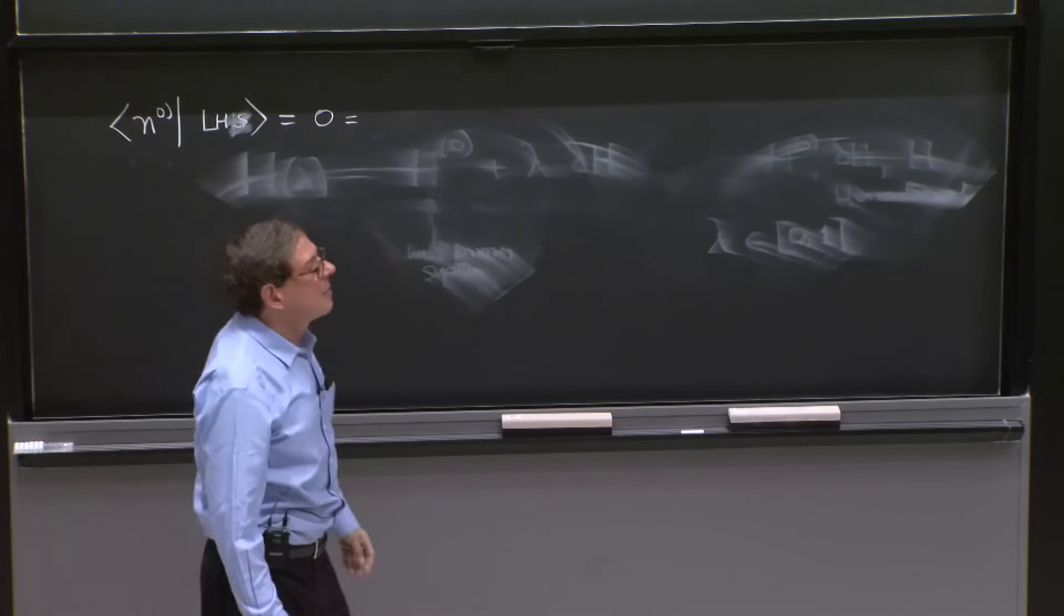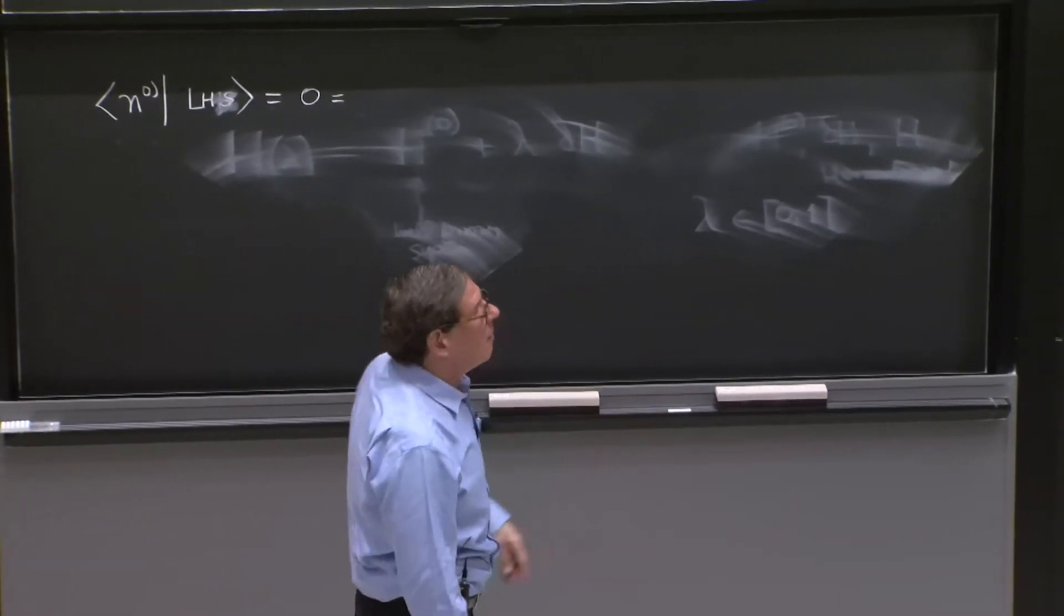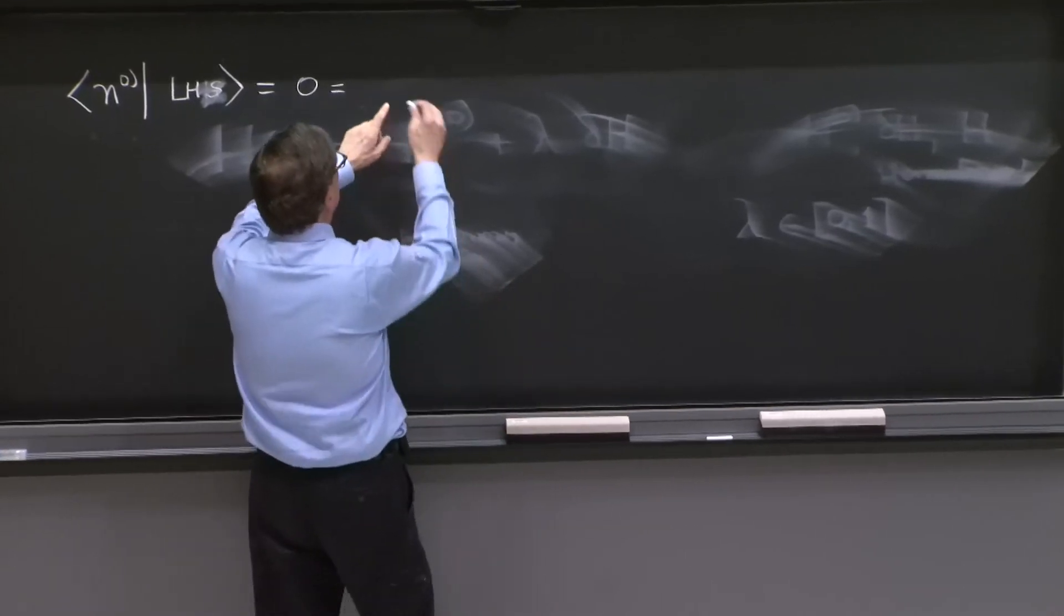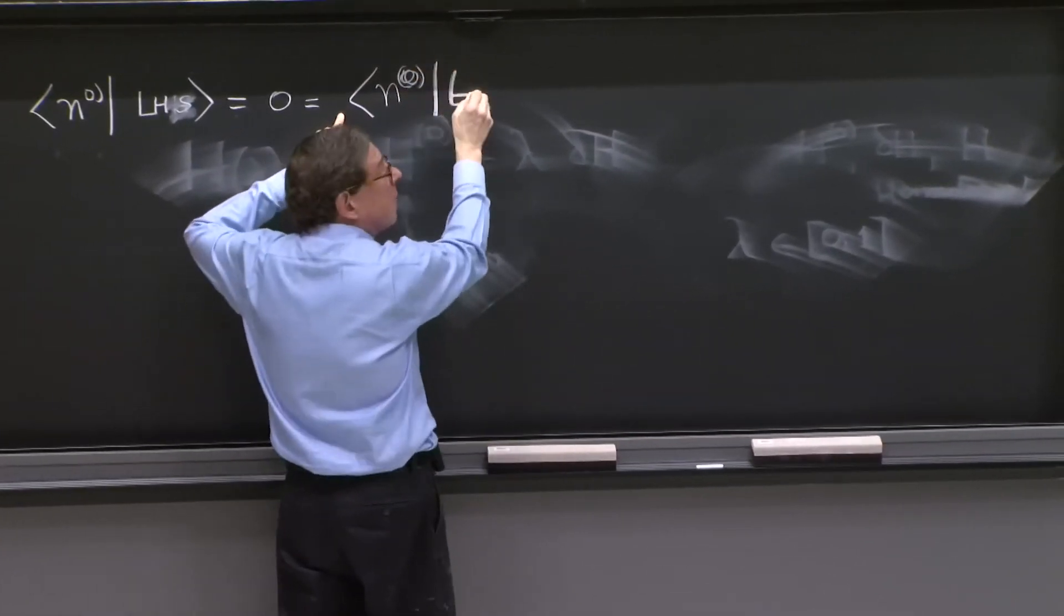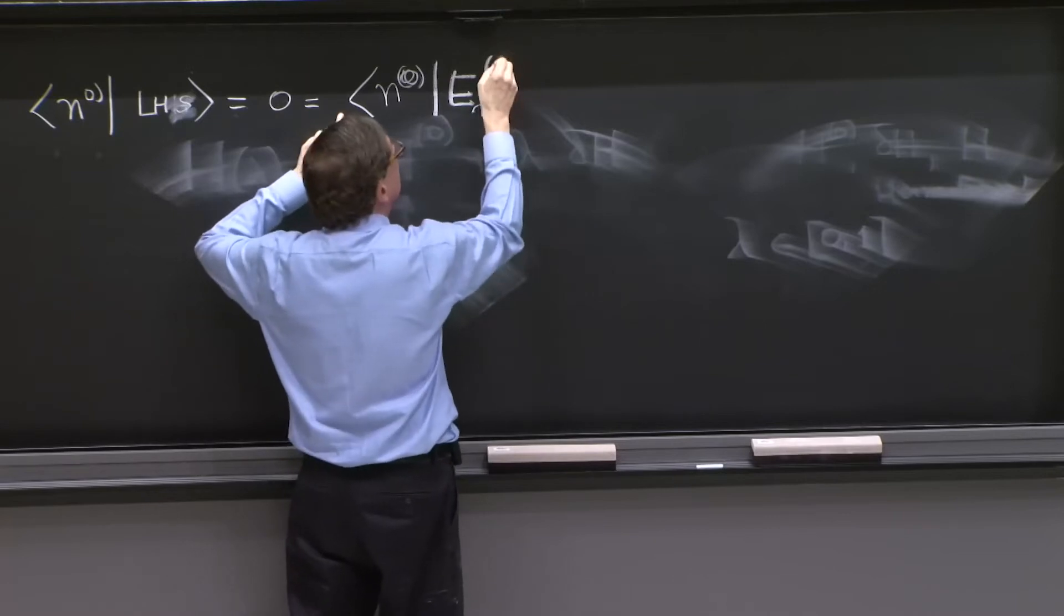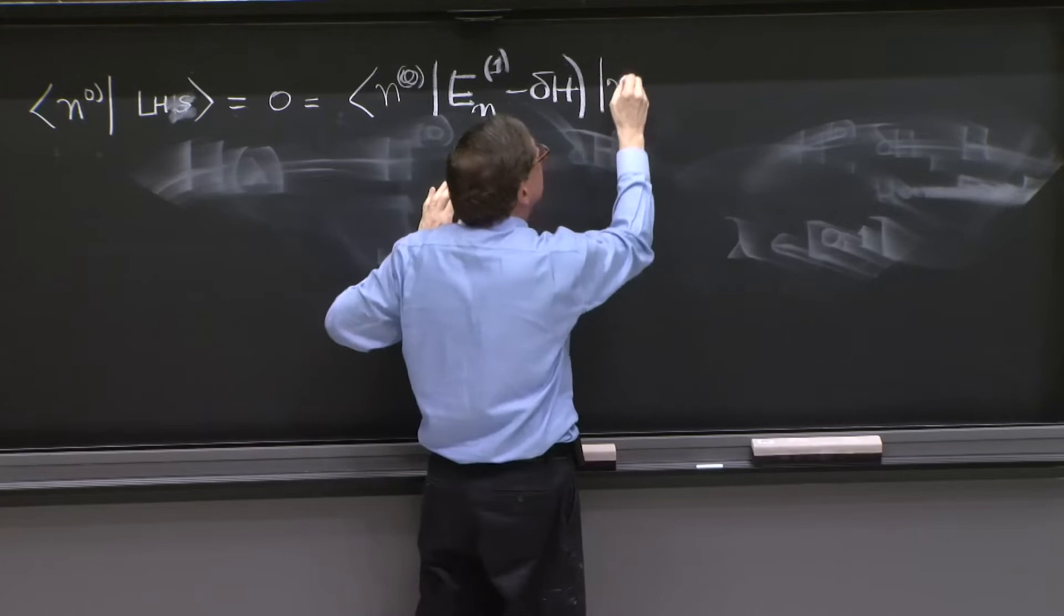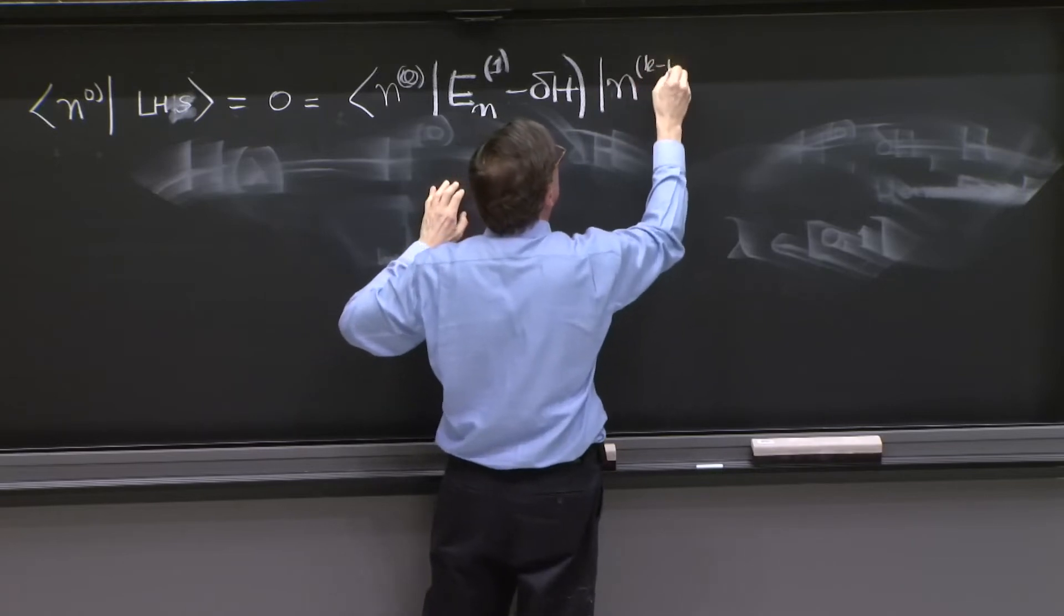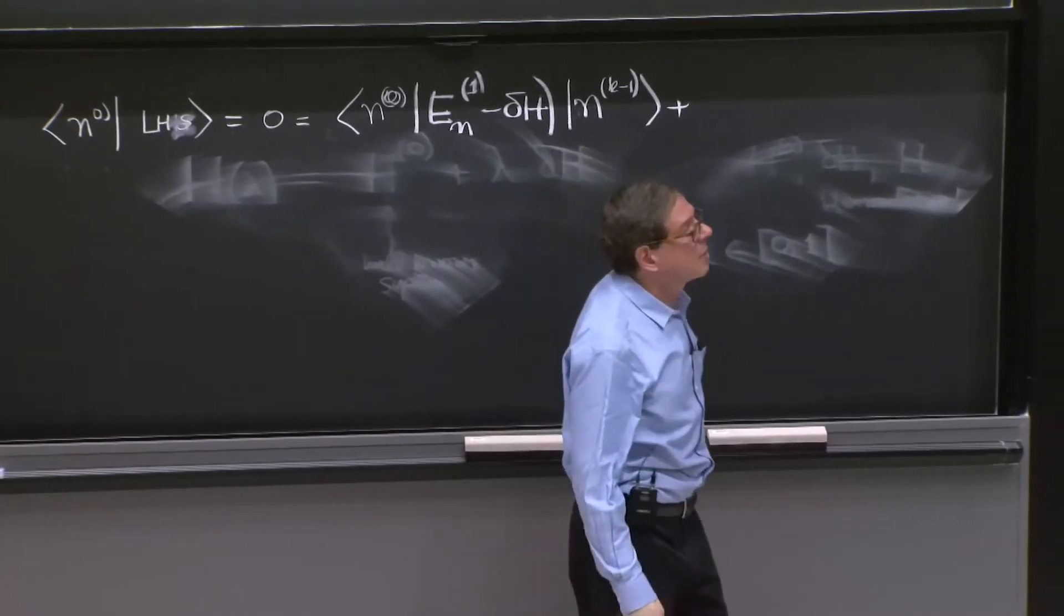And on the right-hand side, what do we get? Well, let me do a couple of terms. n0 en1 minus delta h nk minus 1 plus all these other terms.